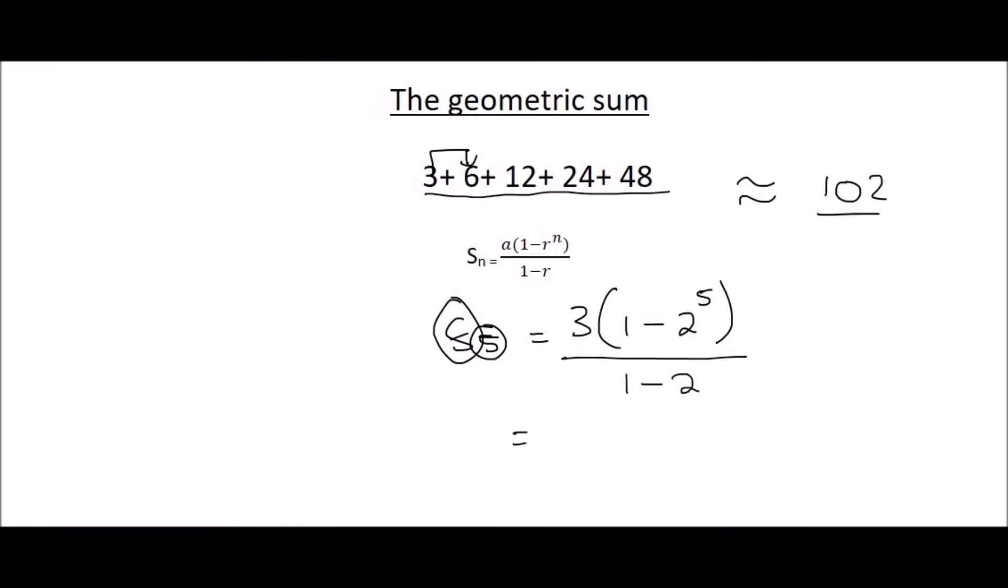If you plug all of that in on the calculator you get a value of 93. Because if we look at position 1 to 5 and then we look at the sum, or the sum of the first one is 3.